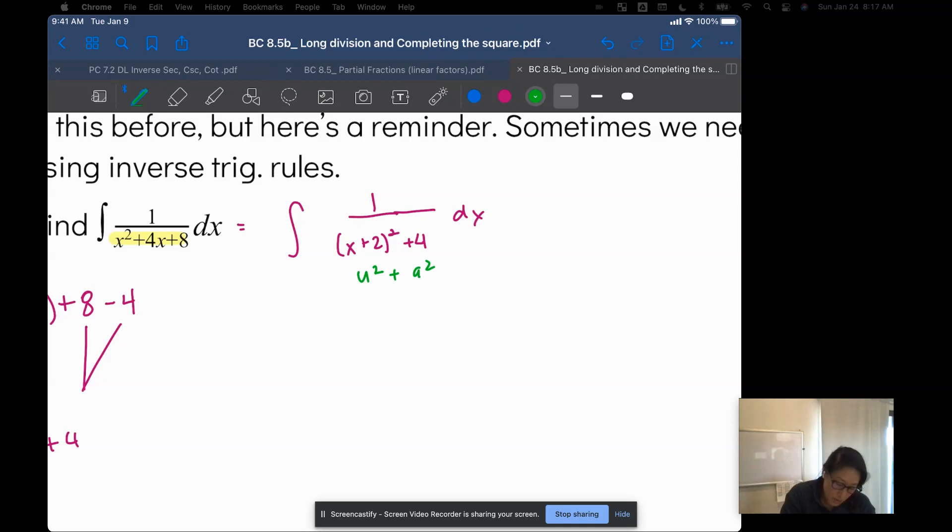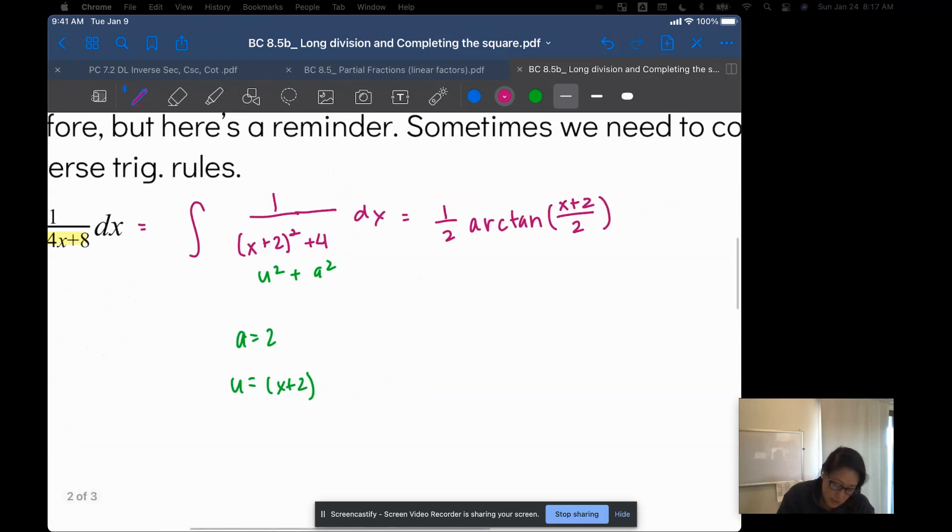So what I end up with is my a is equal to 2 and my u is equal to x plus 2. So the integral of 1 over the quantity x plus 2 squared, plus 4 dx is equal to the arctan of u over a, which is x plus 2 is u, and 2 is a. And then that whole thing we need to multiply by 1 over a. So 1 over 2. And then since it's an indefinite integral, we add our C.